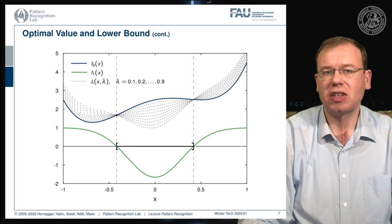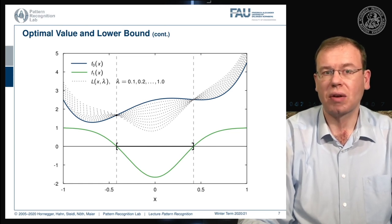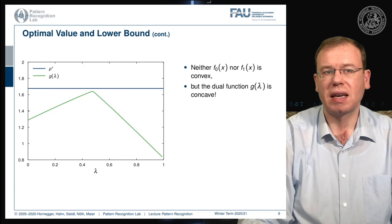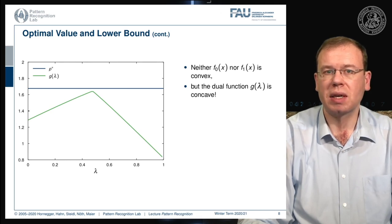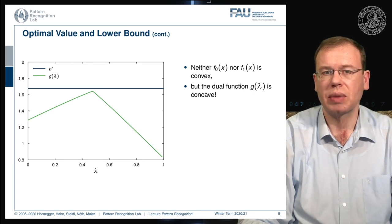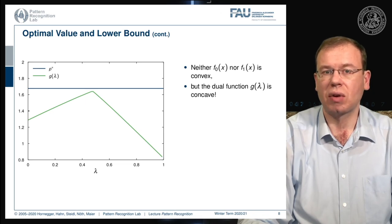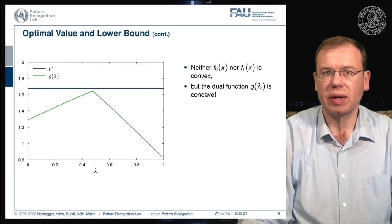We can write this up as a function of lambda. Plotting it differently, we can see p* as a fixed value — the optimal value of our optimization problem. As we vary lambda, the value of the Lagrange dual (this infimum) slowly increases up to some point close to p*, then decreases again. In our example, neither f0(x) nor f1(x) is convex, but the dual function is concave — a very interesting observation.